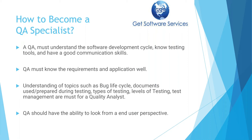A QA must have good knowledge on requirements and understand the application well. He should know terms like bug life cycle, what documents are created during testing, different types of testing, different levels of testing, and test management terms like test planning, test strategy, and test approach. He should also test the application from an end-user perspective — think like a customer, identify issues the end user faces, and ensure those are fixed.